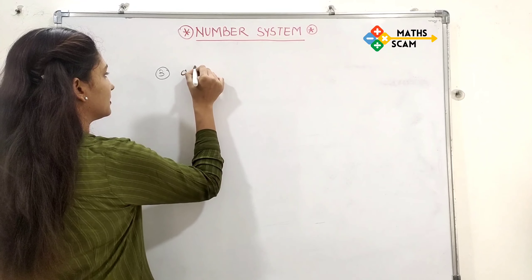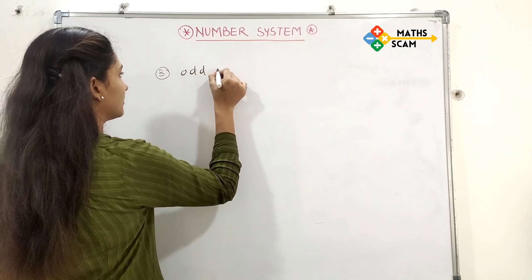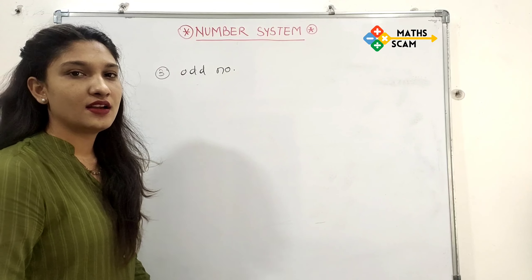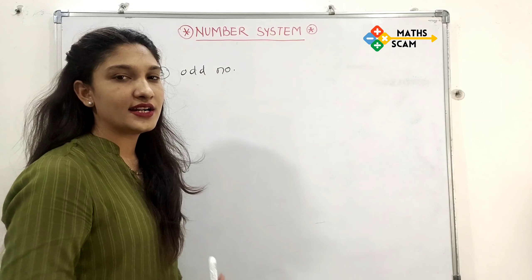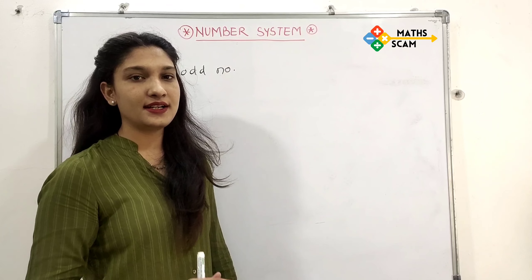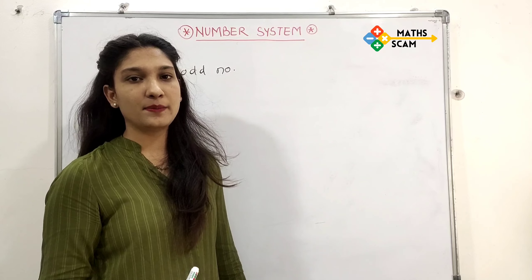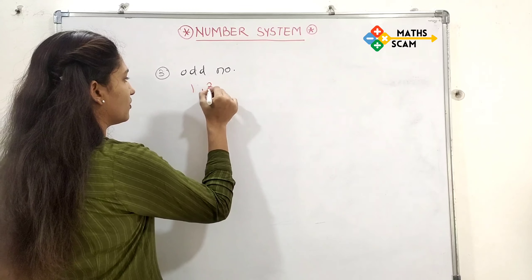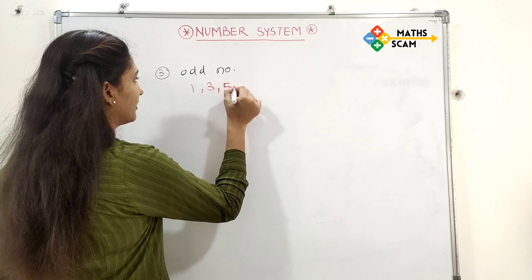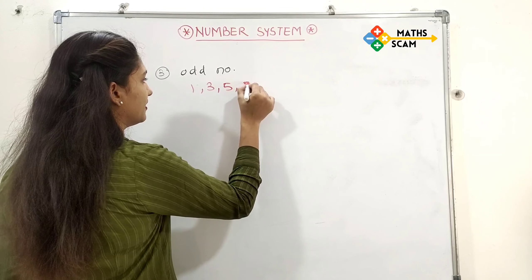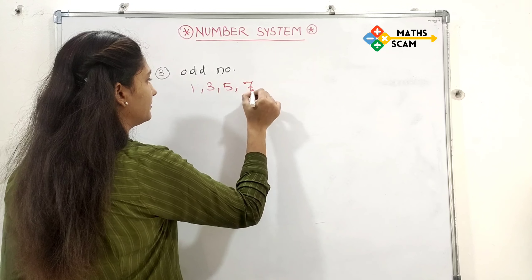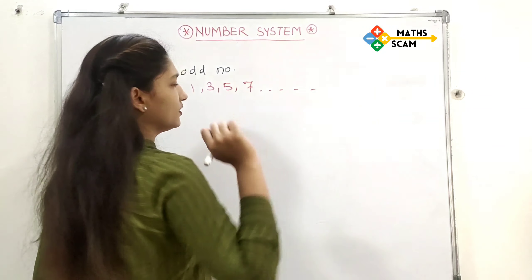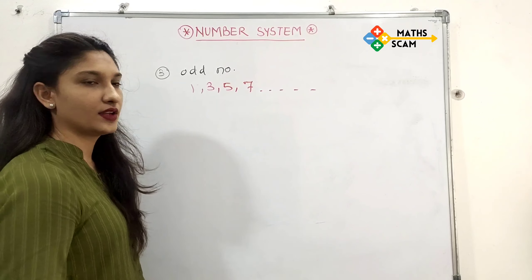Next: odd numbers. Which are odd numbers? Odd numbers are those which are not divisible by 2. Odd numbers are 1, 3, 5, 7 and so on.